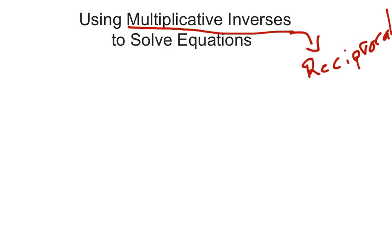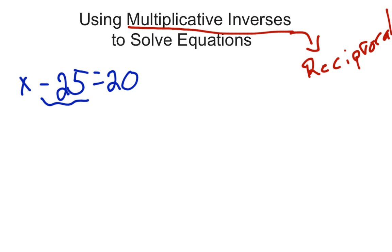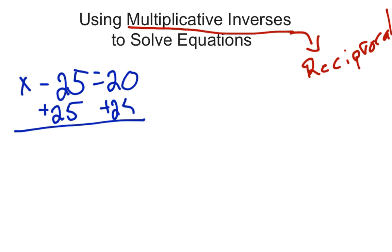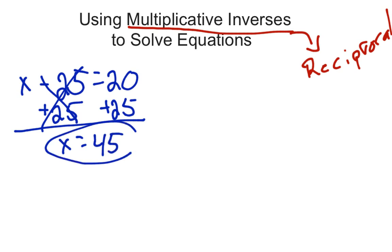Before we get into the multiplicative inverses part, I want to remind us of some rules for solving equations. If I have x minus 25 equals 20, the way we showed our work is using the inverse operation. I see this minus 25, so I get rid of it by adding 25. Whatever you do to one side, you do to the other. The minus 25 and plus 25 cancel out, giving me x equals 20 plus 25, which is 45. You're always doing inverse operations to solve things.